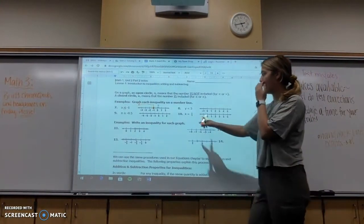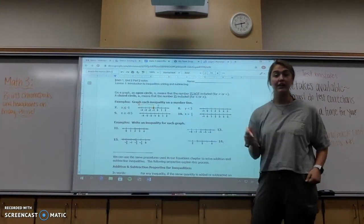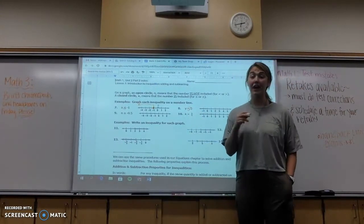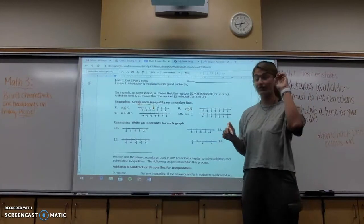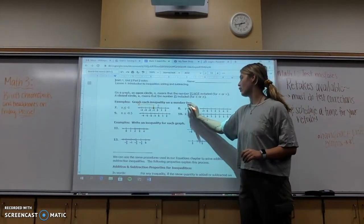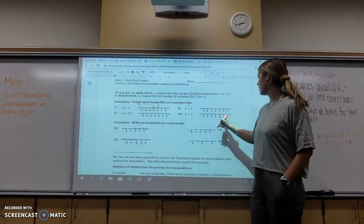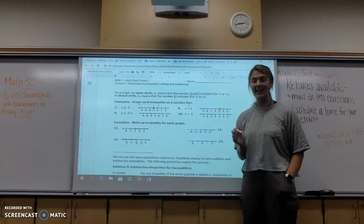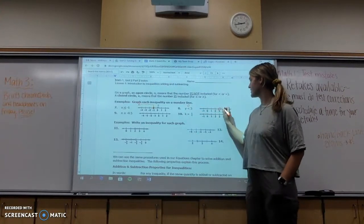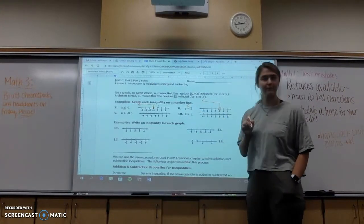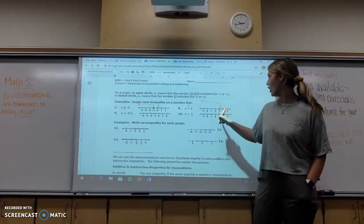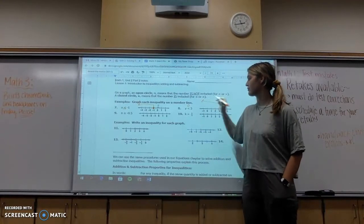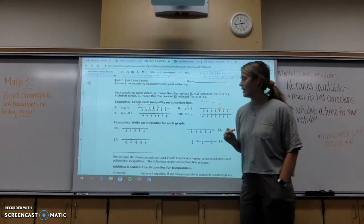Number 8 right here, y is less than negative 3. So the first thing I notice is it is a less than, not a less than or equal to, so it's going to be an open circle. What I do is I just write a little open circle over top of it. I come over here to negative 3, make an open circle, and I know y has to be less than. My arrow points that way. All the numbers that are less than negative 3 are shown here. This little arrow means it goes on forever.